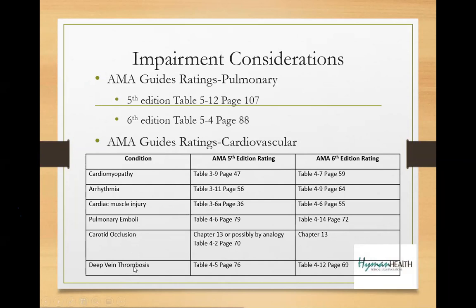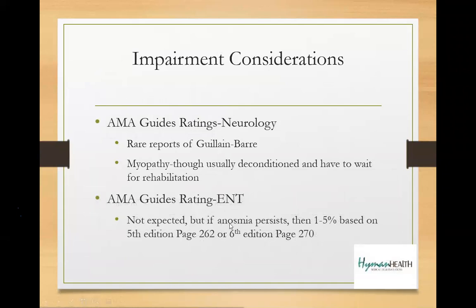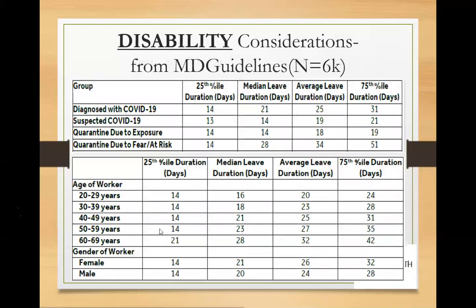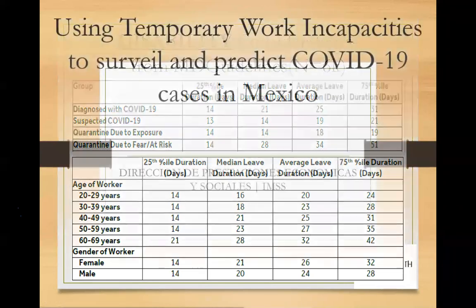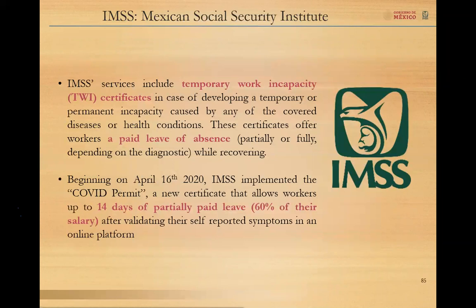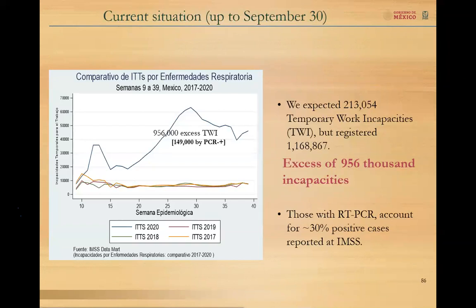Always make sure you have an Activity of Daily Living (ADL) questionnaire in your reporting — that's an important piece. Testing should follow the AMA Guides. All typical complications are covered: heart trouble, arrhythmias, cardiac muscle injury, pulmonary embolism — all rateable. Loss of smell is an ENT issue that can be rated. Hypercoagulable states and psychiatric complications can also be rated. In younger age groups, people may be out of work for a couple of weeks; in older age groups, more involved recovery. Return-to-work frameworks exist internationally as well.